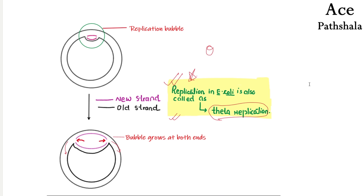When this replication is initiated, the helicase — which in E. coli is basically called DnaB — the helicase enzyme will come here and there will be a point where it will stop replication. DnaB will not move further. The work of helicase is unwinding of DNA. So this will stop the unwinding of DNA at a particular time point. How does that point get decided? Some important points are discussed for that.